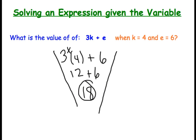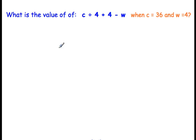Let's do one more of these. What is the value of c divided by 4 plus 4 minus w when c equals 36 and w equals 4? So again, we are given the value of each one of the variables and we need to solve this expression. So we've got c, which is 36, divided by 4, plus 4, minus w, which is 4. So the first step is we're going to write this out while substituting in the numbers for the variables.